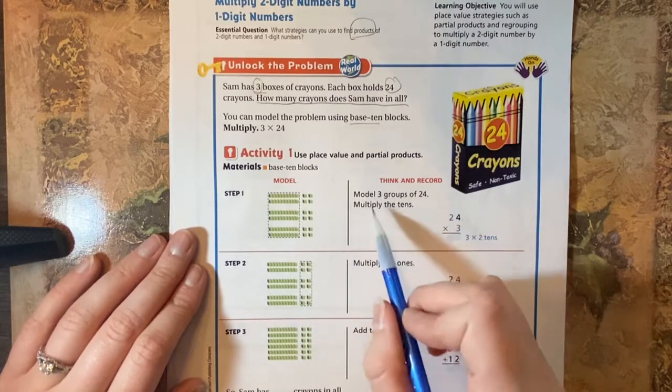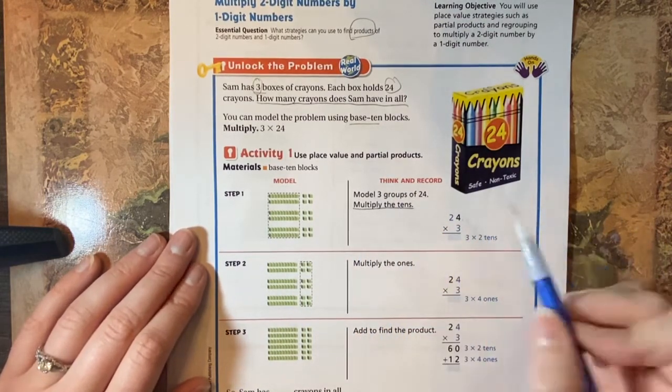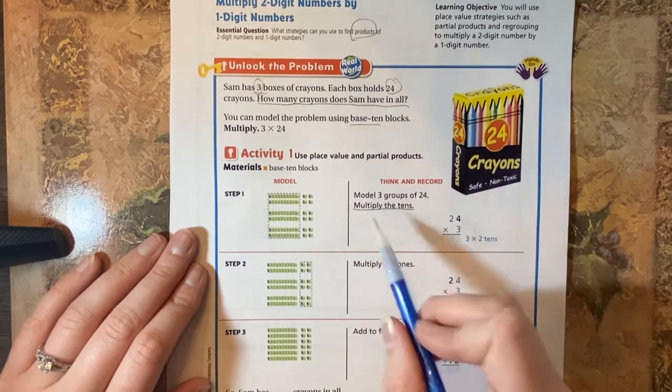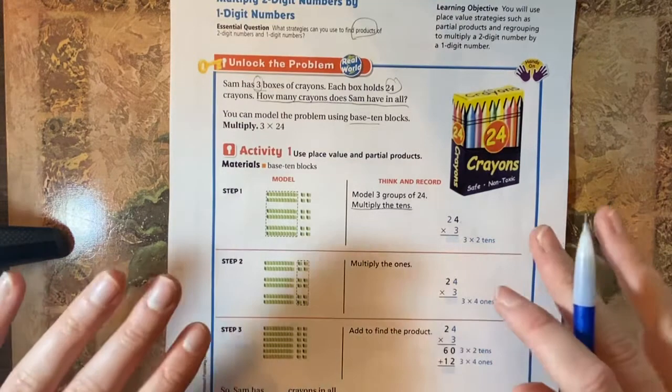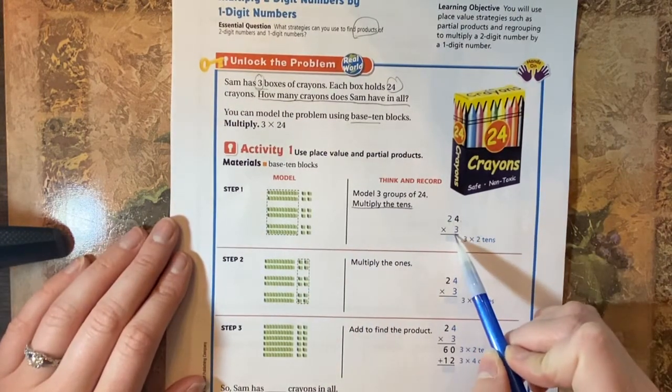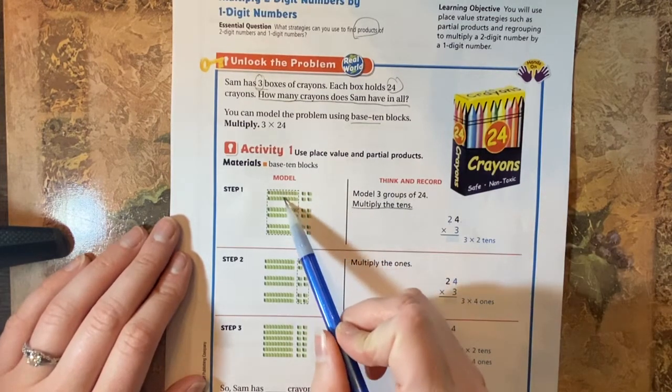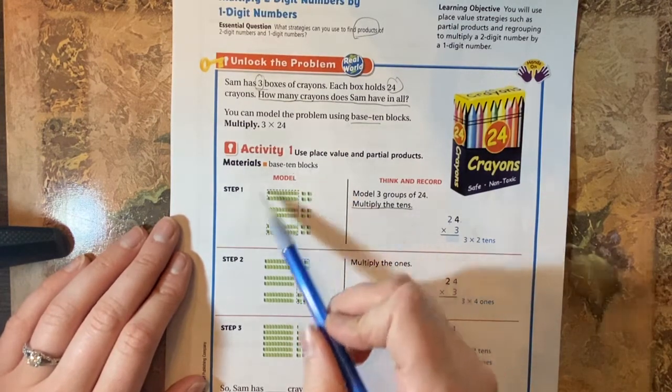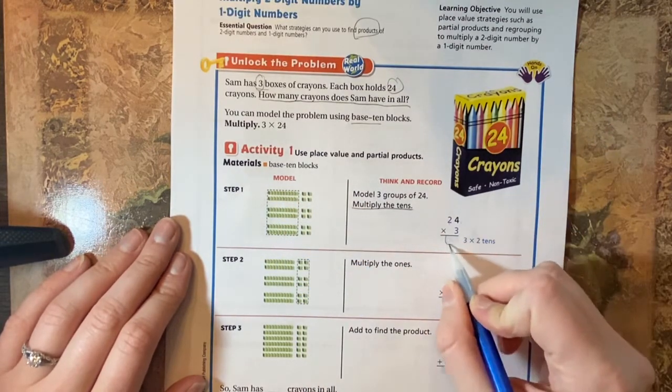Now this is opposite from what we normally do because we normally start in the ones place, but we're going to multiply the tens. We have two times three. Now that's not just two times three, that's two tens times three. So we have to multiply that together. We have three groups of two tens, all in all that's six tens and six tens we know is 60.